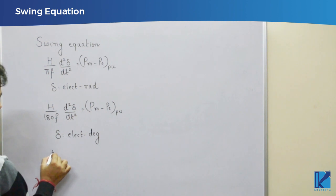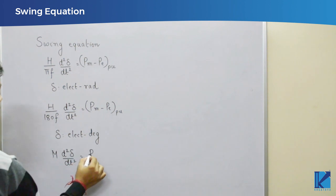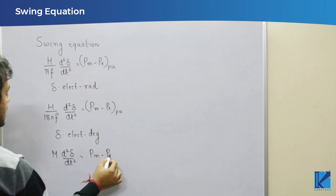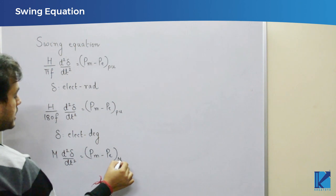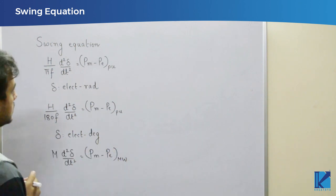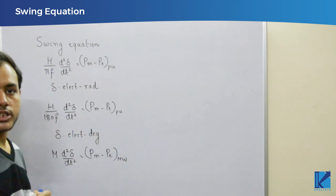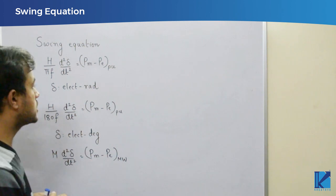Or otherwise, if you want to use actual power, M d square delta by dt square is Pm minus Pe. Usually here, Pm and Pe are in megawatt. So these three expressions can be used as swing equation.